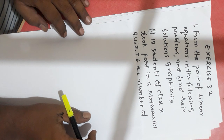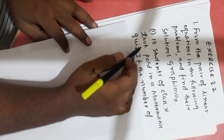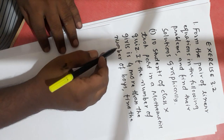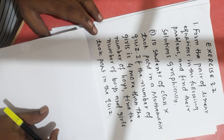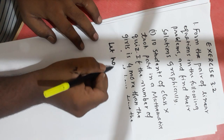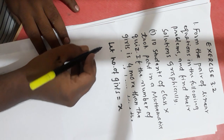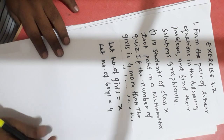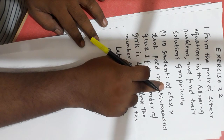In Problem 1: students of Class 10 took part in a Mathematics quiz. If the number of girls is 4 more than the number of boys, find the number of boys and girls who took part in the quiz. For this, let us assume the number of girls is equal to X and the number of boys is equal to Y. Total students are 10.